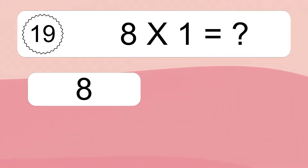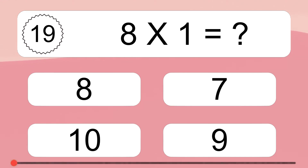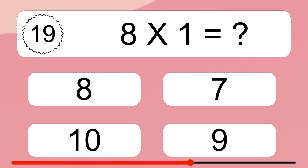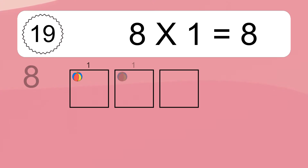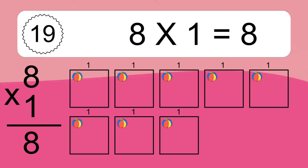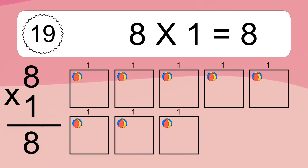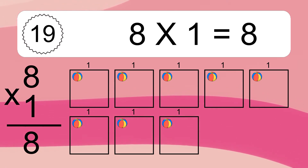8 times 1 equals what? 8 times 1 equals 8. We have 8 boxes and each box has 1 colorful ball inside. If you count all the balls in all the boxes together, you will have 8 times 1 balls. This equals 8 balls.